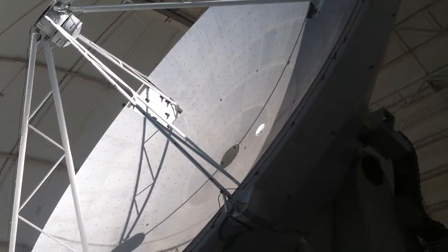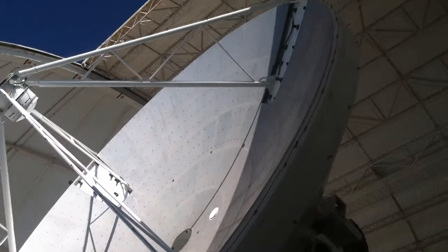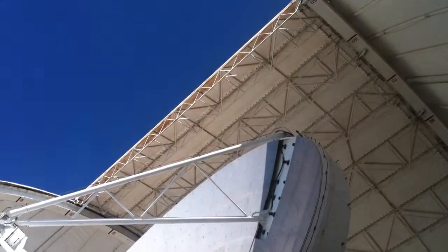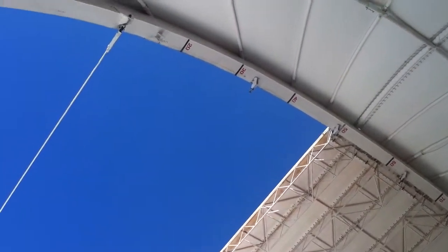That little hole next to the big center hole has an optical telescope so we can do optical pointing. And this thing lives inside the 12 meter dome on Kitt Peak which is a huge steel and fabric dome.